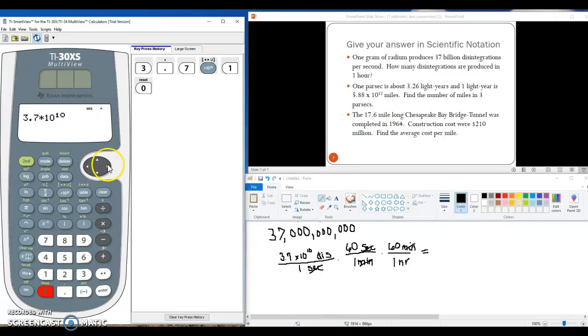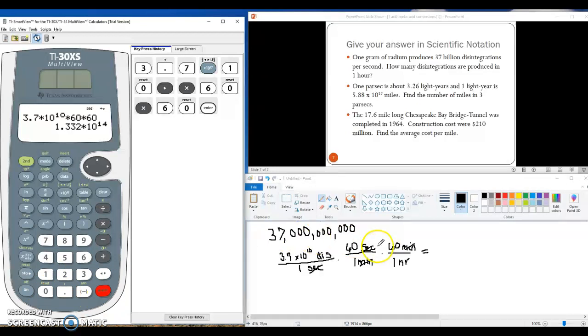Multiplying straight across, I have to exit the exponent, and then times 60, and times 60 again. And so, we have as an answer for this, 1.332 times 10 to the 14th power, and that would be the number of disintegrations per hour.